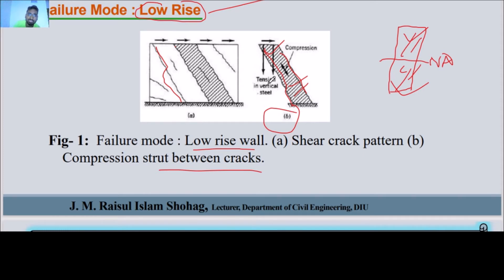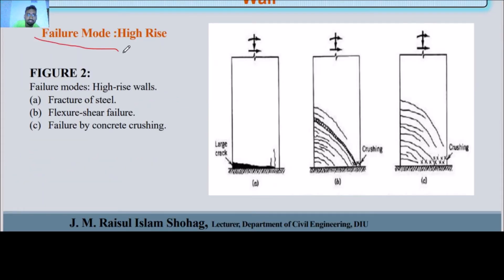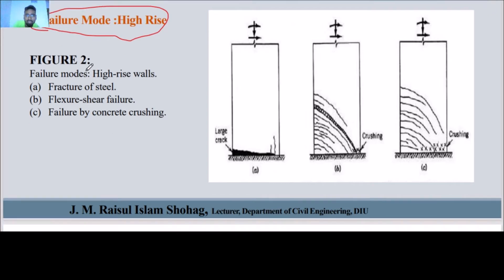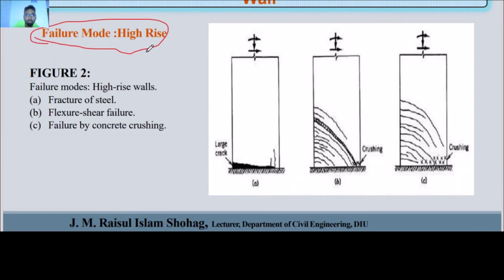So we can see the failure mode for a high-rise building. The wall is under a normal type of loading and is cut at various angles. The linear shape is also cut.